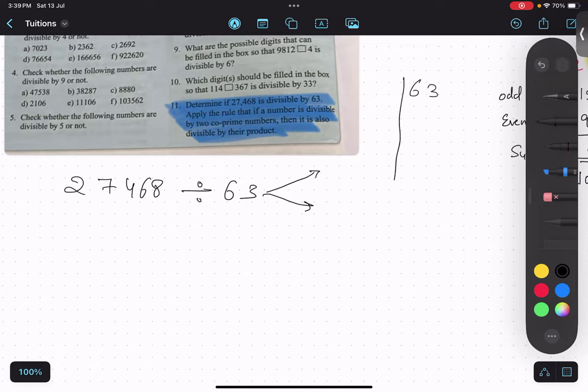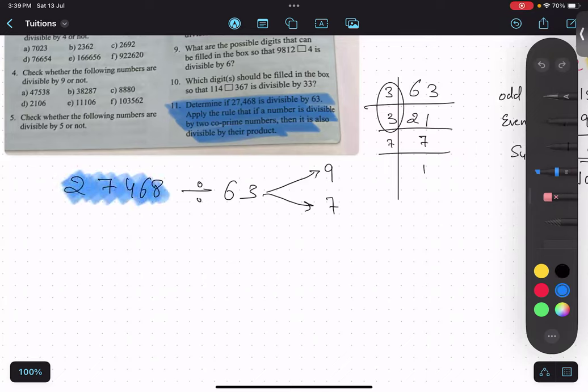We will find out the prime factors of 63. 3, 21, 3 again, 7, 7. So we have to find coprime numbers basically. 3 into 3 is 9 and 7, so basically 9 into 7 will become 63. So if this number is divisible by 9 and 7, then this number is divisible by 63 also.